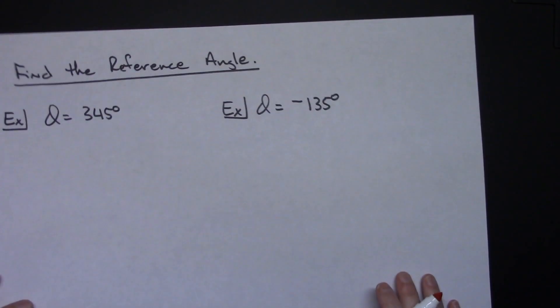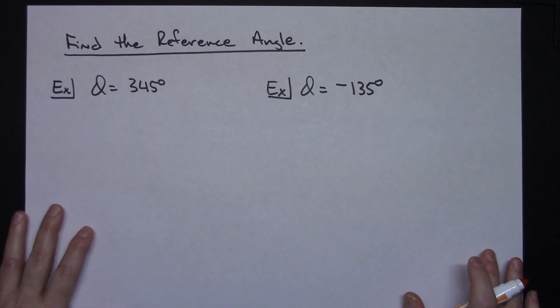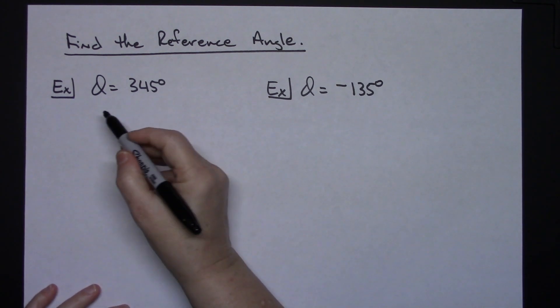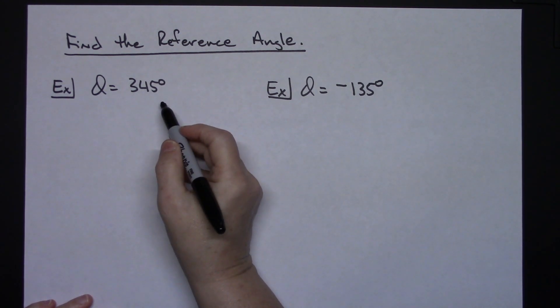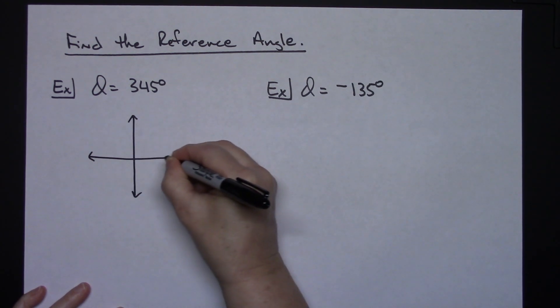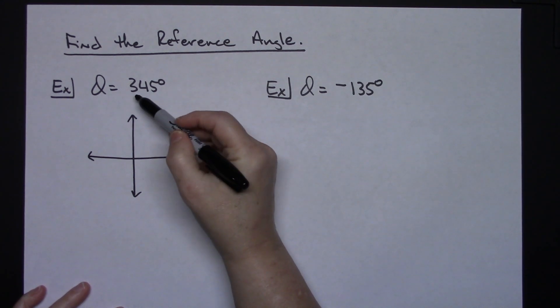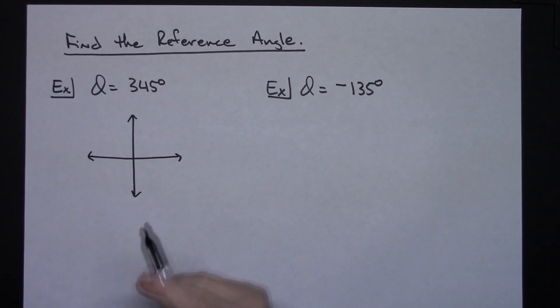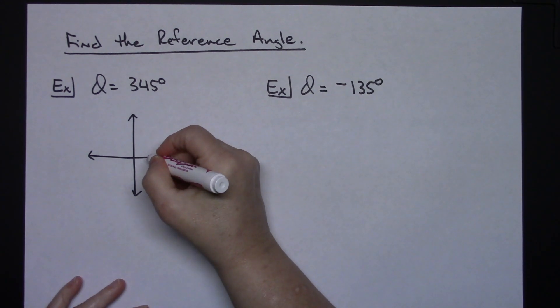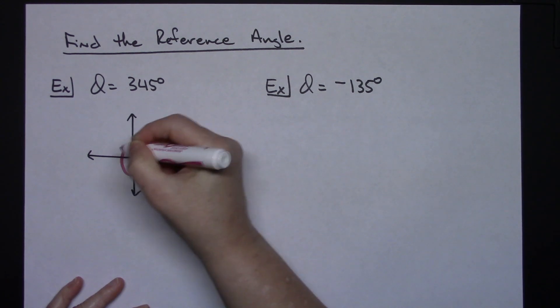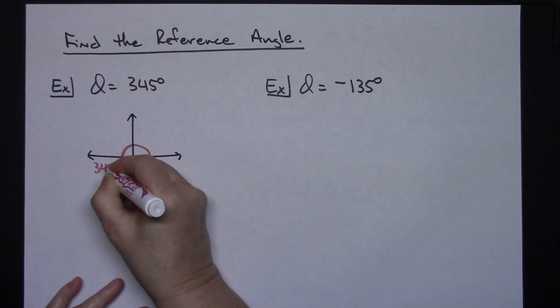Now let's actually work out a couple of examples where you have to find the numerical value of that reference angle. Let's say find the reference angle and they give you theta equals 345 degrees. I would recommend that you do just a little rough sketch so that you can actually see it. 345 degrees is going to put us all the way around and then in this fourth quadrant. So 345 degrees would put us somewhere down here.